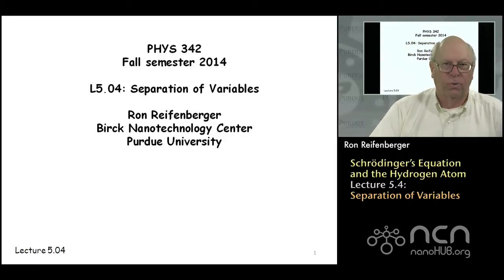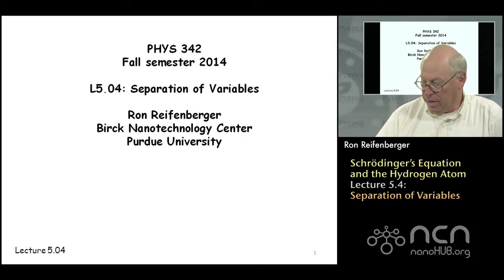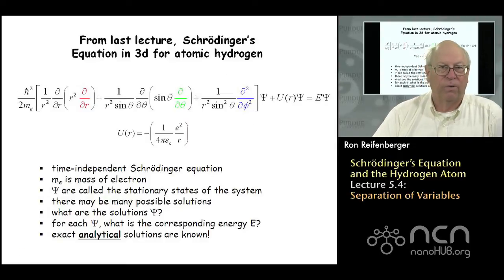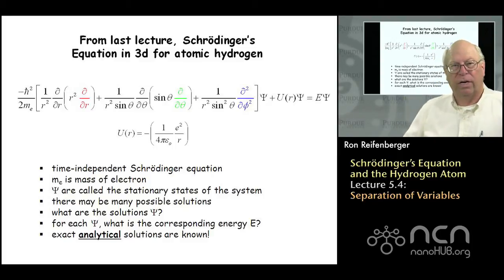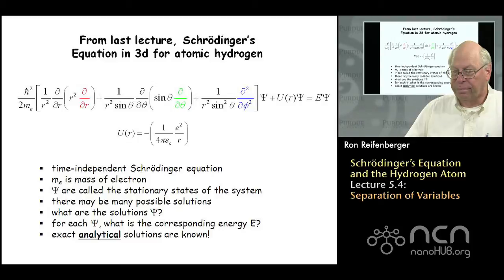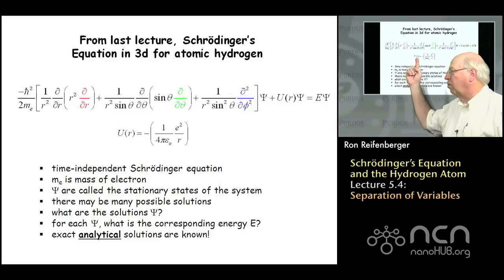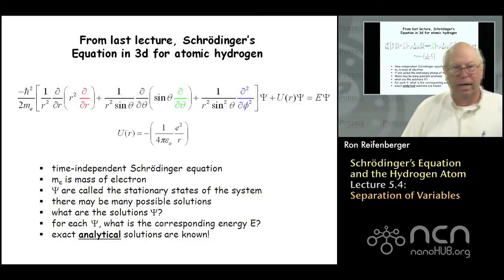We're back again. In this lecture we're going to focus on an in-depth discussion of the solutions of Schrödinger's equation for the hydrogen atom. The interaction potential energy is this 1/r electrostatic Coulomb potential energy, and that has to be put into Schrödinger's equation. What we're trying to do is find wave functions psi that solve that equation.